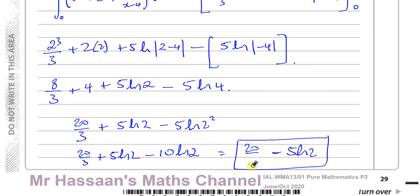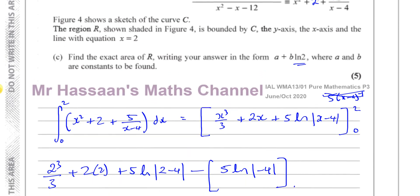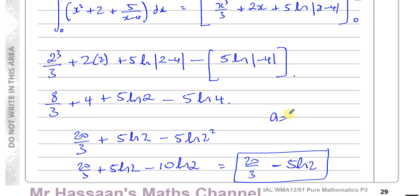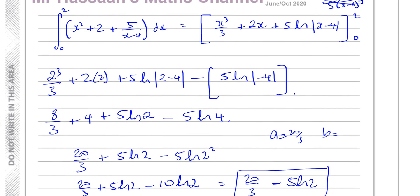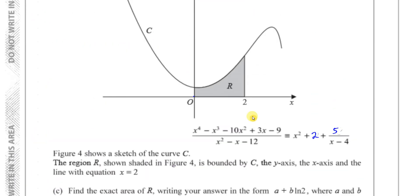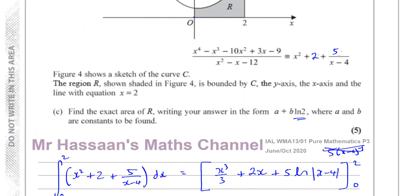20 over 3 minus 5 ln 2 — and there's my final answer. That's the area under the curve between those values, in the form A plus B ln 2. From here, our A is 20 over 3 and our B is equal to minus 5. That's the answer to question 9 part C, and that was the end of the paper.